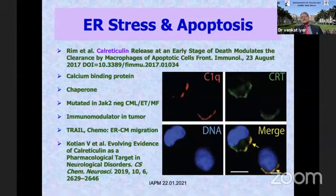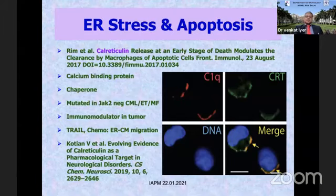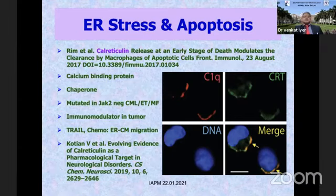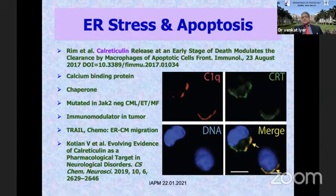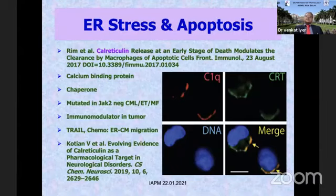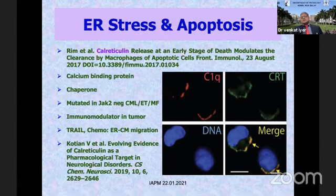ER stress is very directly linked to apoptosis. A good illustration is to understand how calreticulin functions. Calreticulin is one of the chaperones — it is not just a chaperone but also a calcium-binding protein present in the ER. Whenever oxygen-mediated damage occurs in the endoplasmic reticulum, there is increased expression of calreticulin. But if the damage becomes too much, there is a relocalization of calreticulin — it goes from the endoplasmic reticulum to the cell membrane, where it now acts as a phagocyte marker for uptake of apoptotic bodies, and also triggers apoptosis via activation of other apoptosis pathways.